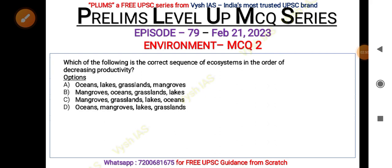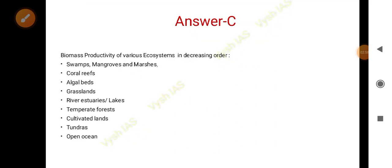Definitely you can make out that C and D cannot both be correct — either C will be correct or D will be correct. The answer is actually C. The biomass productivity of various ecosystems in decreasing order starts with swamps, mangroves, and marshes, which have very high productivity, then coral reefs, algal beds, then grasslands, then rivers, estuaries, and lakes, then temperate forests.